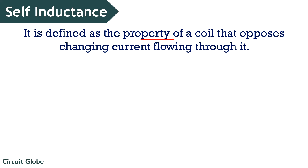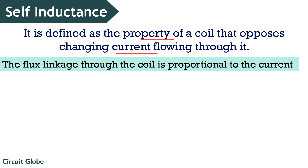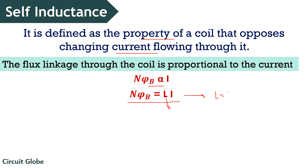Now let's understand self-inductance. People generally get confused between the terms self-induction and self-inductance and use them interchangeably. But these two terms are interrelated but not the same. Self-inductance is defined as the property of a coil that opposes the changing current flowing through it. The flux linkage through the coil is proportional to the current, written as NΦB is directly proportional to I. On removing the sign of proportionality, we get NΦB = L × I, where L represents the coefficient of self-induction. Simplifying this equation, we get L = NΦB / I, which is the expression for self-inductance.